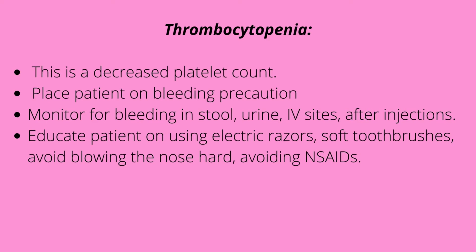Thrombocytopenia is another complication — a decrease in platelet count. Since platelets are decreased, the patient is at high risk of bleeding, so we place them on bleeding precautions. We monitor for bleeding in their stool, urine, and IV sites. After injections, we hold pressure for at least 10 minutes, not five. We educate the patient to use electric razors, soft toothbrushes, and to avoid blowing their nose too hard, since that could cause a nosebleed. Because of thrombocytopenia, they could bleed a lot. They should also avoid NSAIDs, as NSAIDs have a tendency to cause GI bleeding.